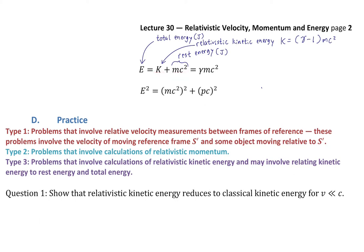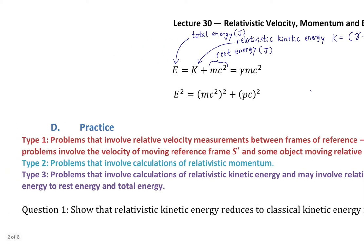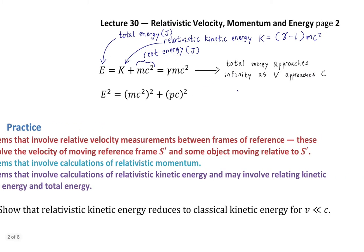Since the relativistic kinetic energy is gamma minus 1 times mc squared, distributing that mc squared gives just gamma times mc squared for the total energy. So the expression for total energy is actually simpler than the expression for relativistic kinetic energy. Total energy also approaches infinity as V approaches C, because if kinetic energy is going to infinity, total energy must as well.